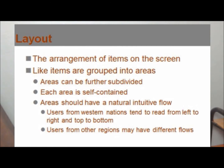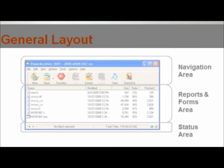The first of the six is layout of the screen. Layout is about laying things out, but items can be grouped into areas and areas can be subdivided. The key is that there should be a natural, intuitive flow. Users from Western nations tend to read left to right, top to bottom, while users from other regions — particularly Asian regions — read right to left, and this is something you need to consider. The general layout has navigation at the top, forms and reports in the middle, and a status area at the bottom.